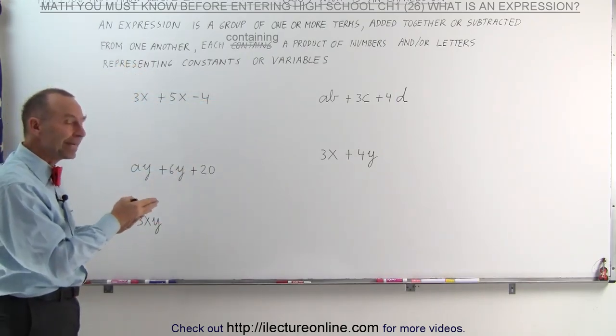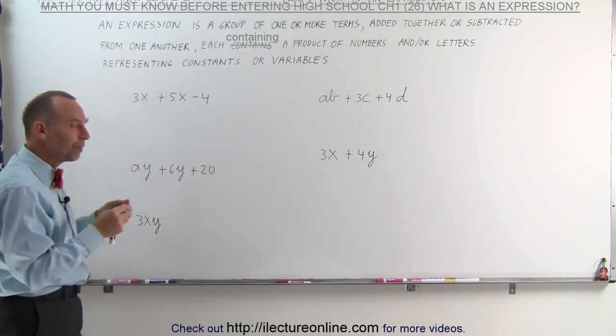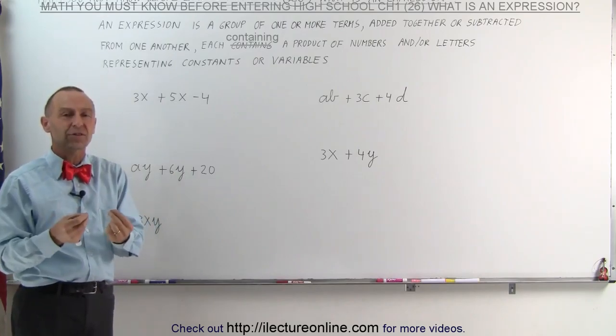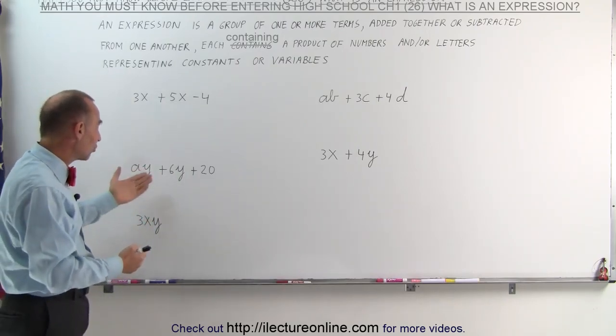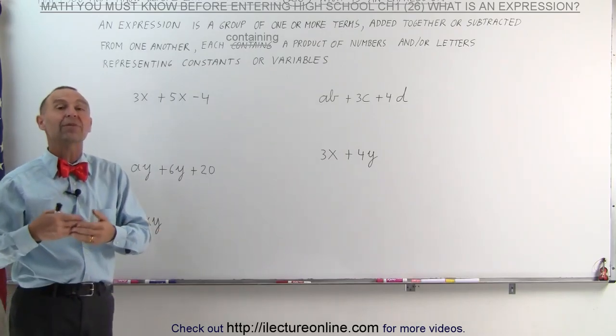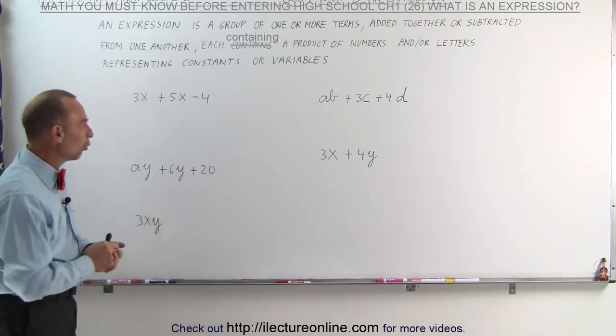The ones that are written in the beginning of the alphabet, like a, b, c, d, that type of letter, those are typically representative of constants. And letters that are in the end of the alphabet, like x, y, and z, are typically representative of variables. Not exclusively, but that's the norm.